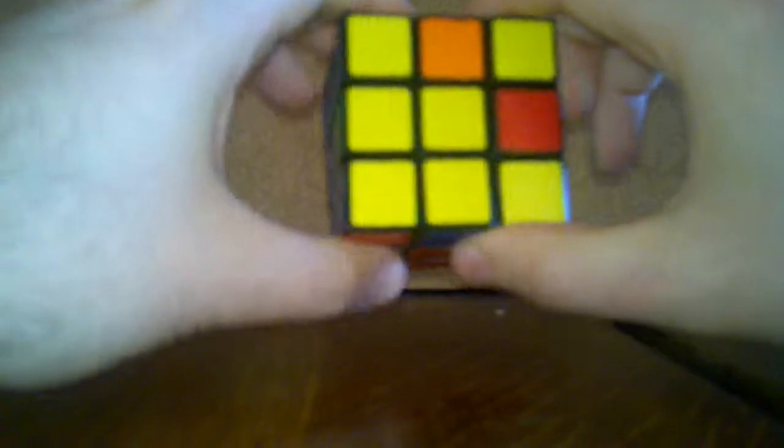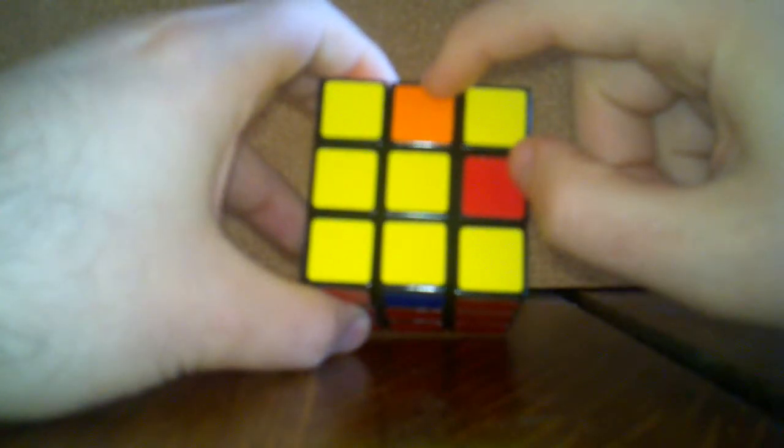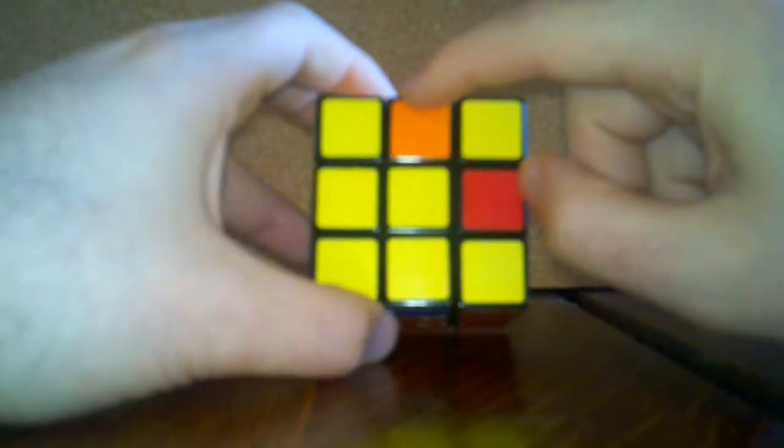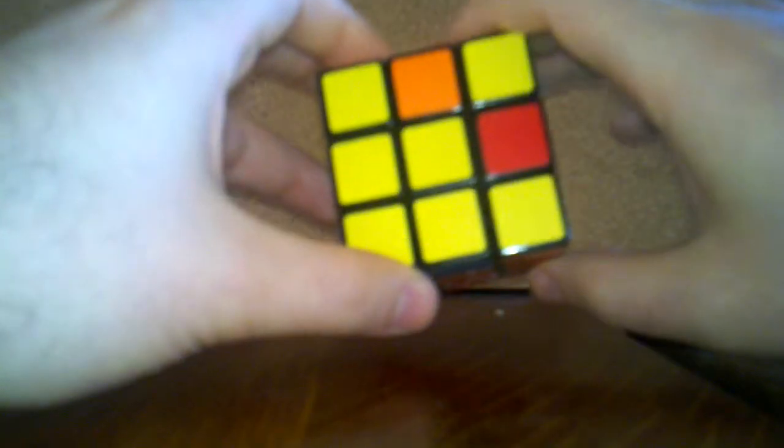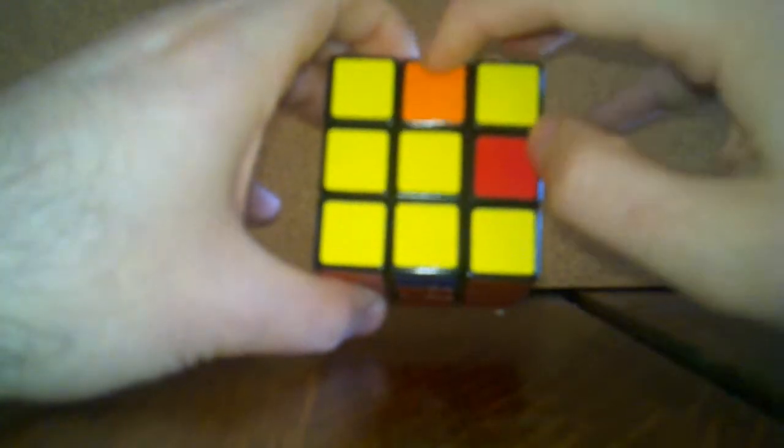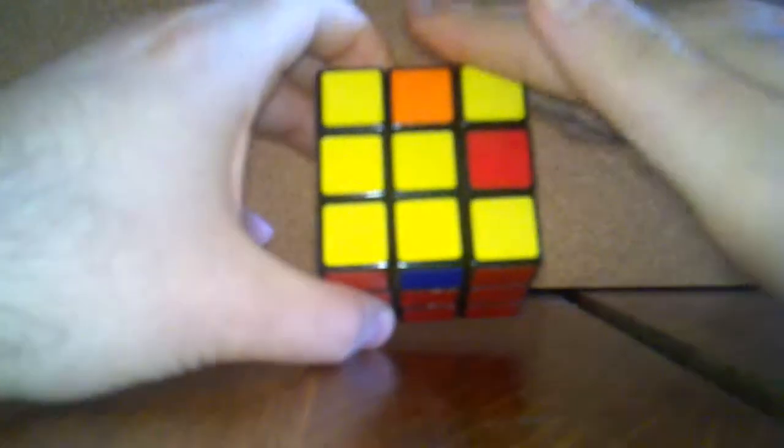So once you're done you realign these pieces. Now you can see we've still got two that are not yellow. So this is how you know which way to do the hamburger. When you've got two that are next to each other, you want those on the upper right hand corner.